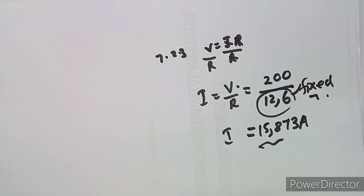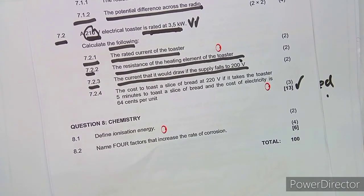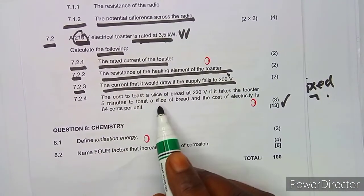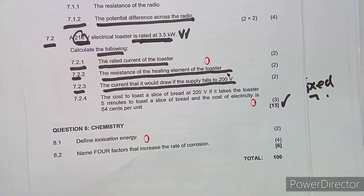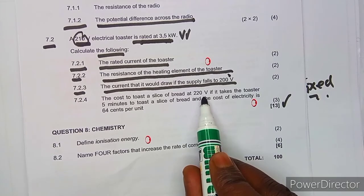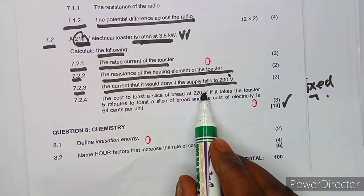The next question asks us to calculate the cost to toast a slice of bread at 220 volts, if it takes the toaster 5 minutes to toast a slice and the cost of electricity is 64 cents per unit.